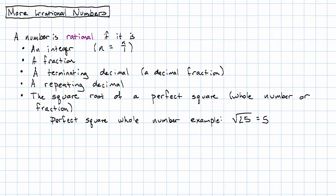What about perfect square fractions? If I take three-fifths and square it, that'll be three-fifths times three-fifths is nine-twenty-fifths. So, the square root of nine-twenty-fifths is three-fifths.